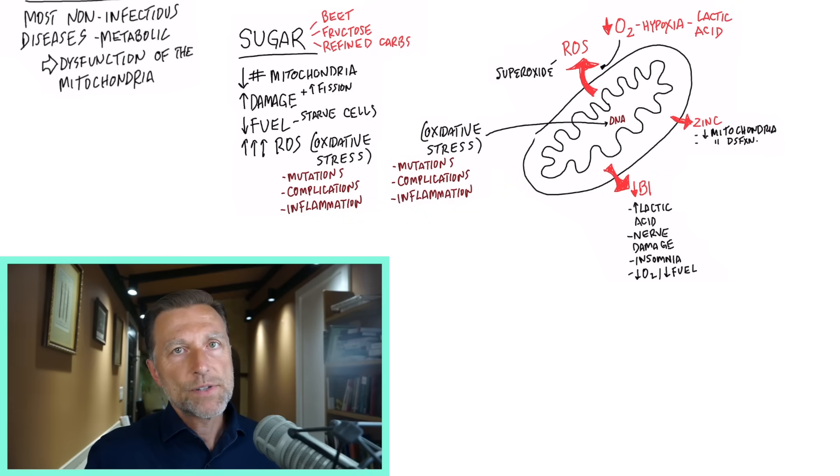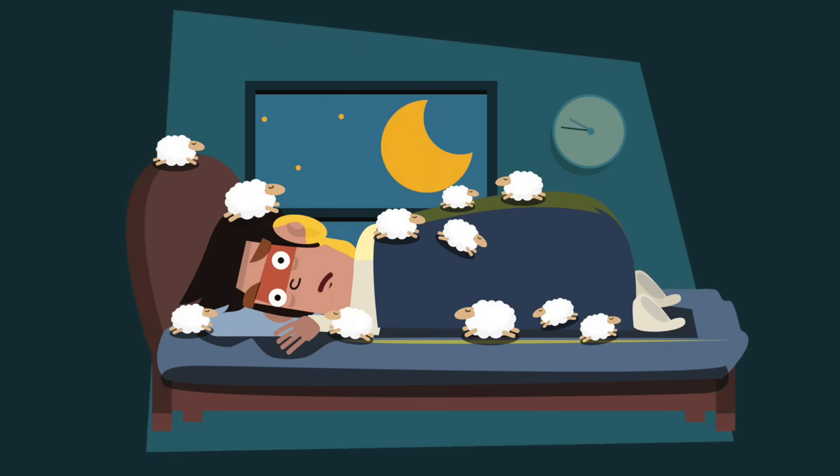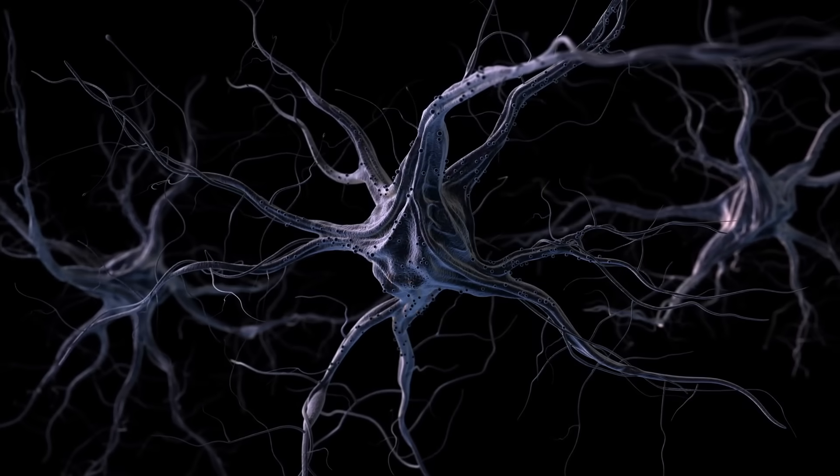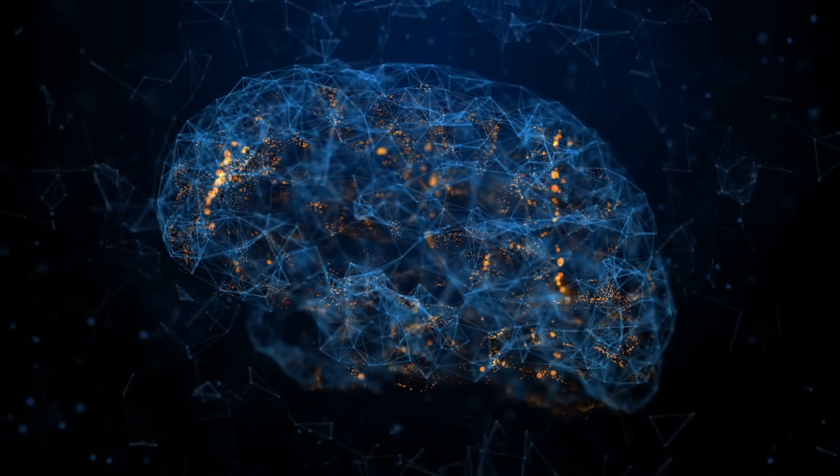But also with a B1 deficiency, there's a lot of other problems that occur too. An anxiety state, a lot of nervous tension, a lot of excessive thinking, insomnia, nerve damage in other parts of the body, and also damage in certain parts of the brain that have to do with memory.